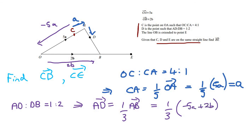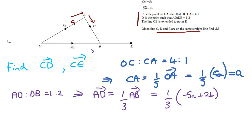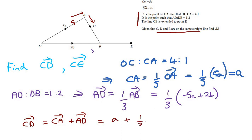Now we can find CD. The vector CD equals C to A plus A to D. CA is 'a' and A to D is one-third(−5a + 2b). Combining and factorising the 'a' terms, we get CD equals one-third(−2a + 2b).